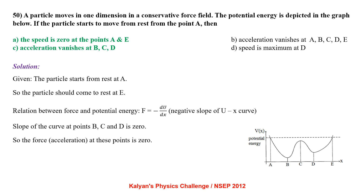A particle moves in one dimension in a conservative force field with potential energy depicted in a graph. The particle starts from rest at A and should come to rest at E. Force F = −dU/dx, i.e. negative slope of the PE-x curve. Slope at points B, C and D is zero, so force at these points is zero. Options A and C are correct.